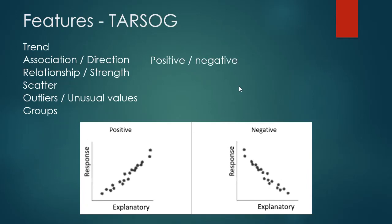The direction or association is either going to be positive or negative. Positive means from left to right the data points go upwards. Negative means from left to right the data points are going downwards.